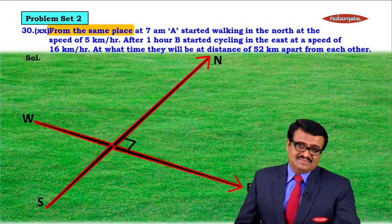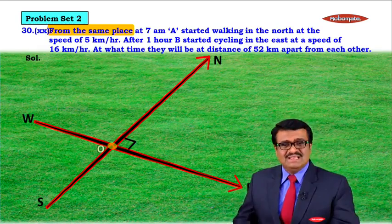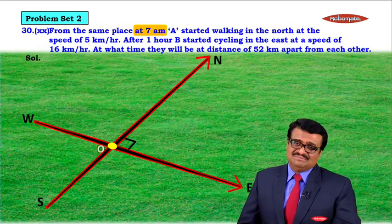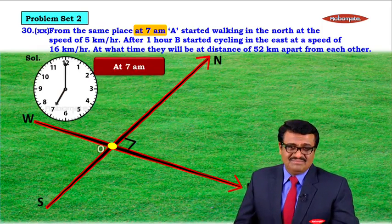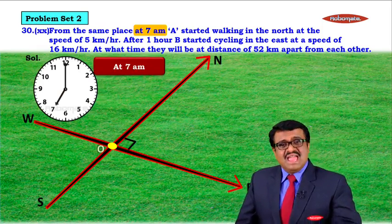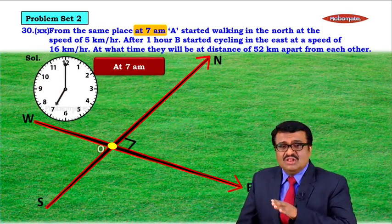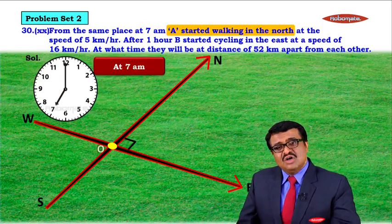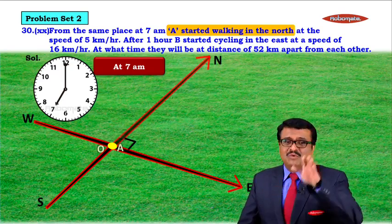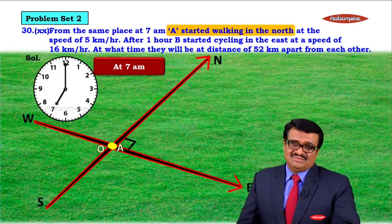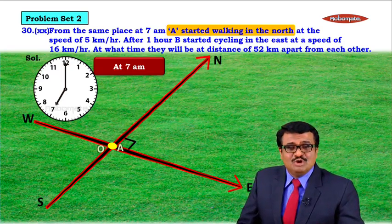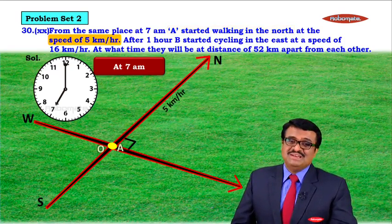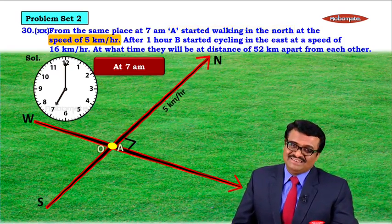From the same place — suppose the place is point O. From the same place, at 7 a.m., A started walking in the north, meaning he went upwards, at a speed of 5 km per hour.